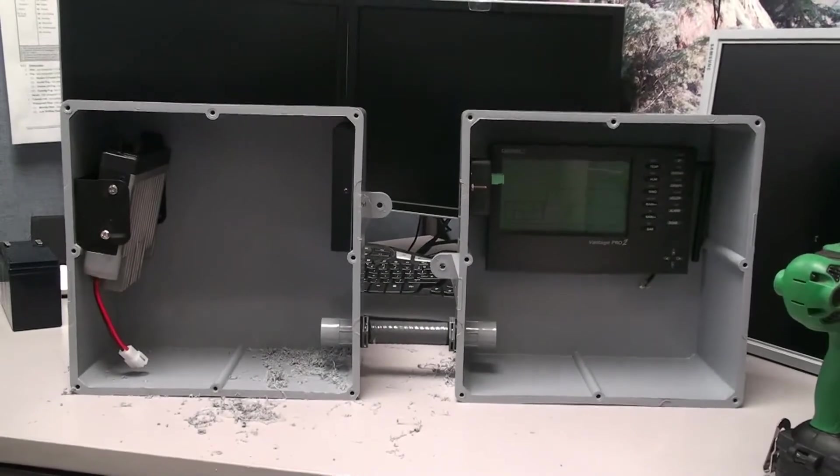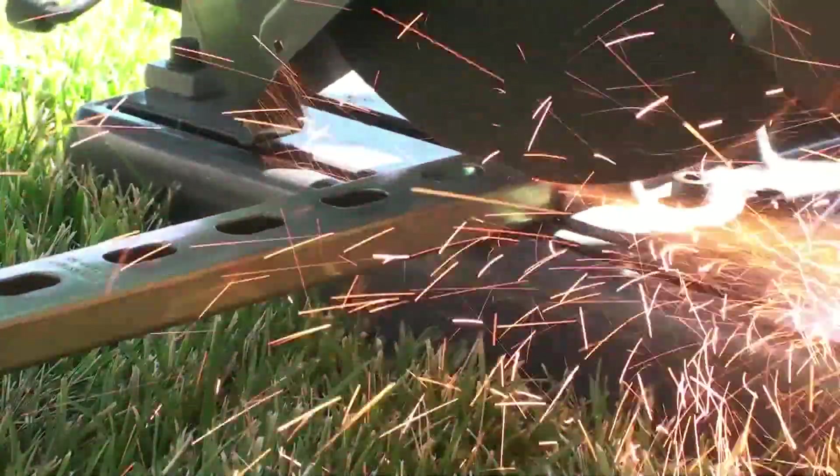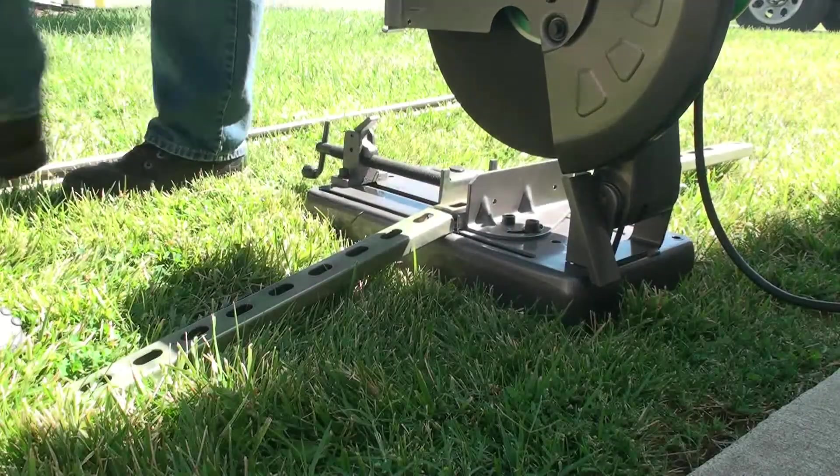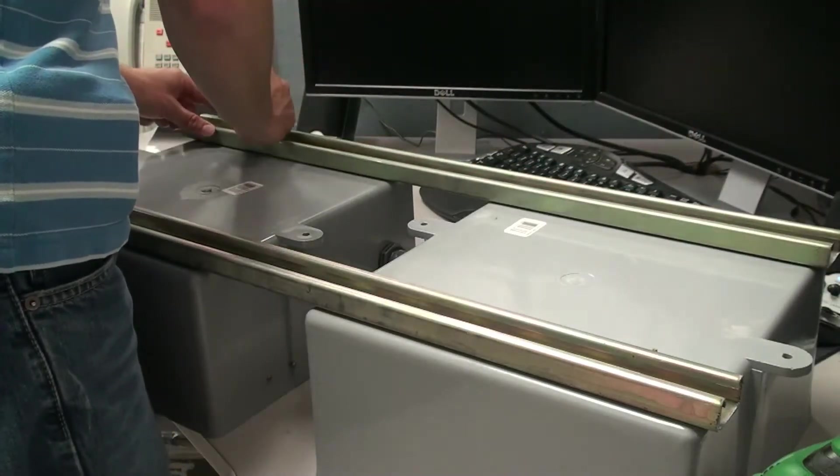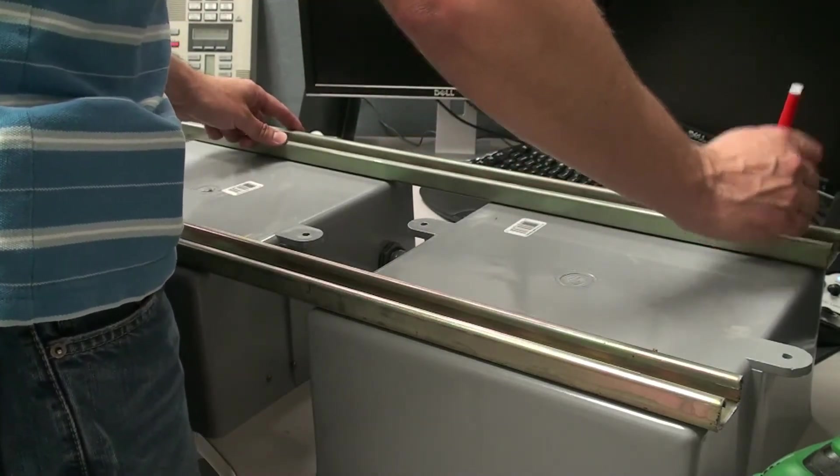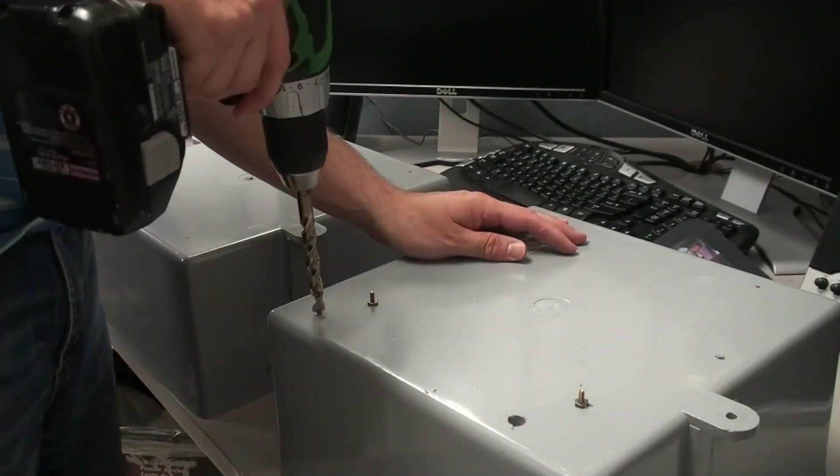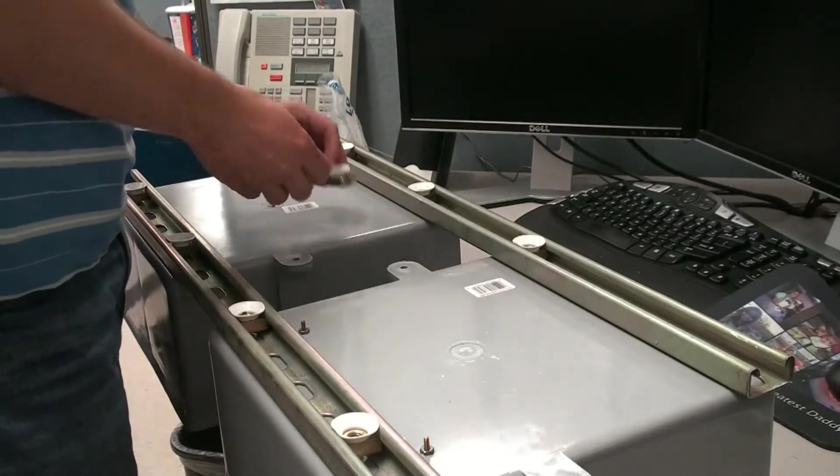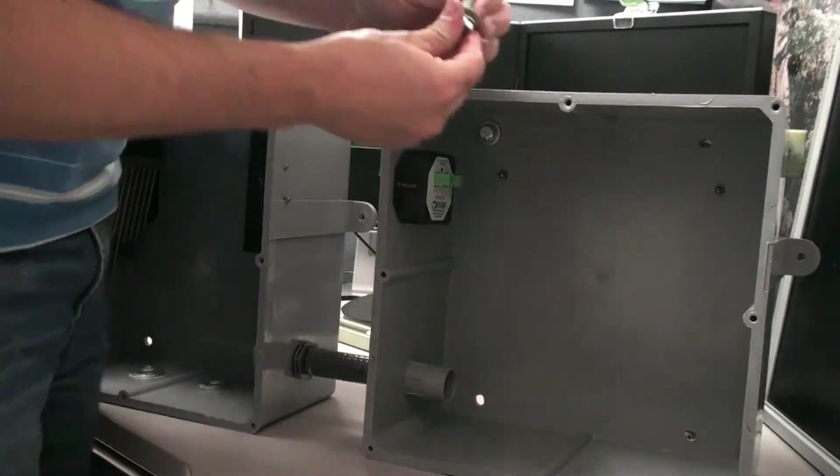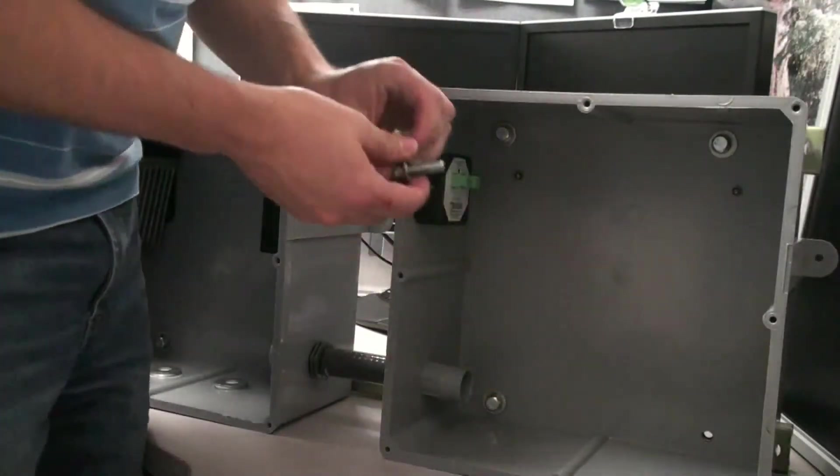Now that that's complete, let's secure the two electronics boxes together with a piece of super strut on the top and bottom backs of the boxes. This will be used to mount the boxes to the mast later on. Here you can see I'm marking the spots where to drill the bolt holes. Now slide the cone nuts into the super strut over each of the holes that you've drilled. With the holes drilled and the cone nuts in place, you can now attach the super strut to the boxes with some bolts and washers.